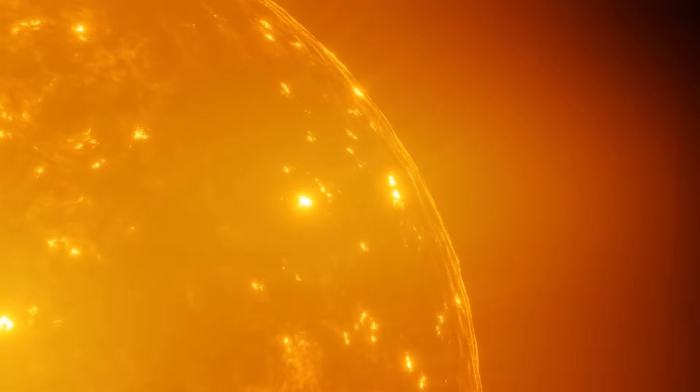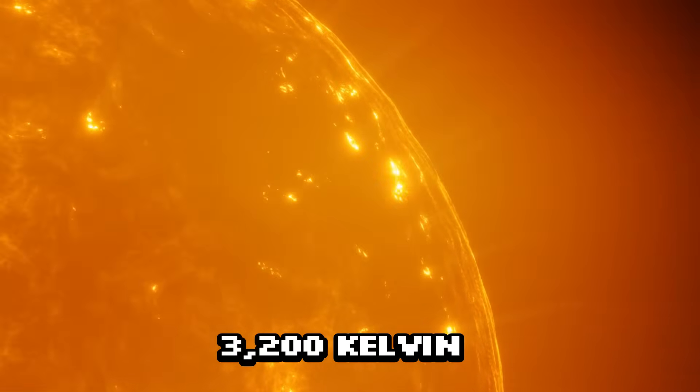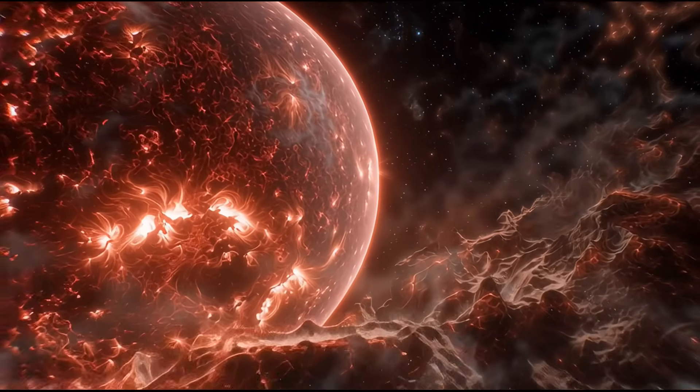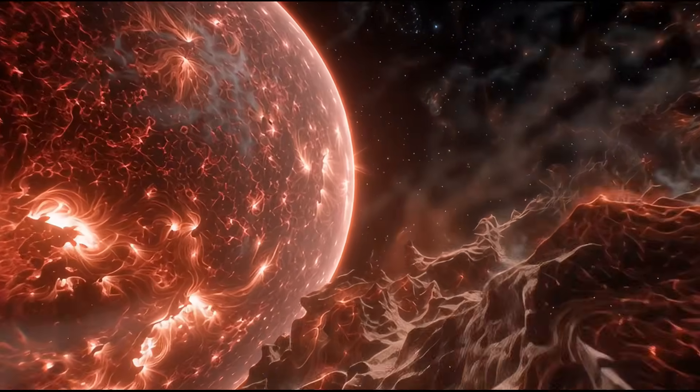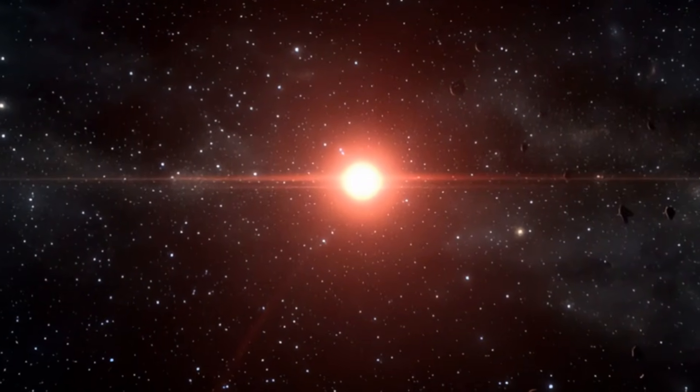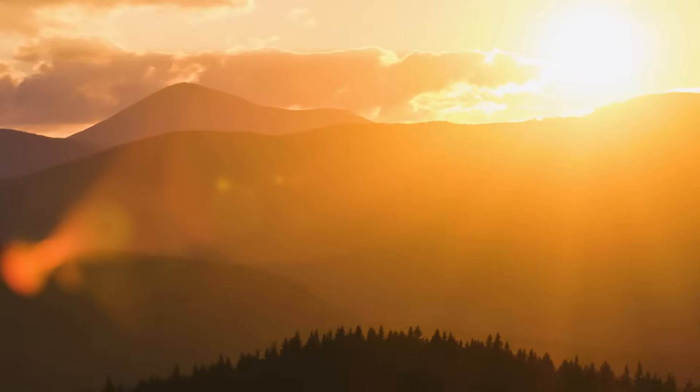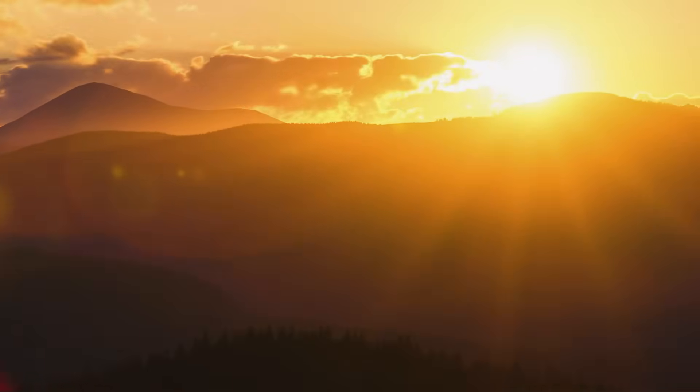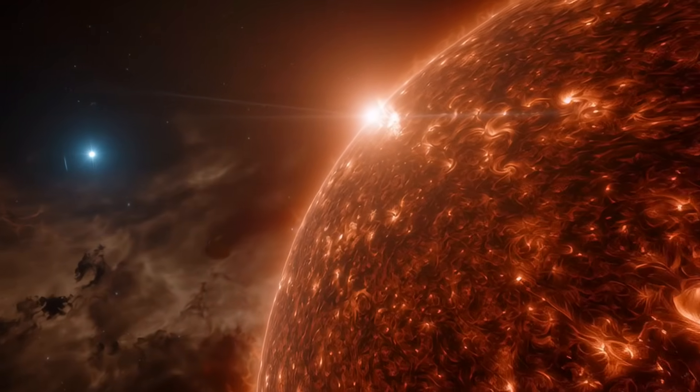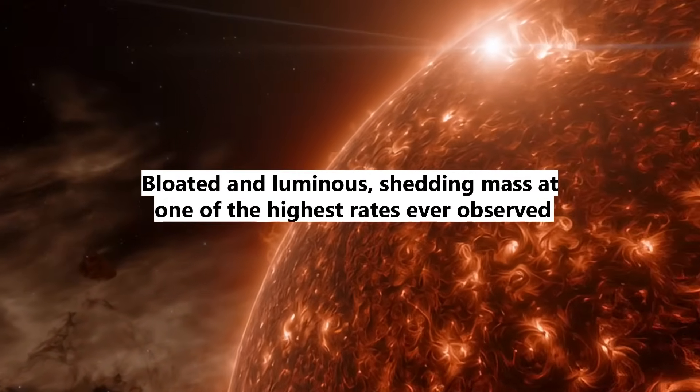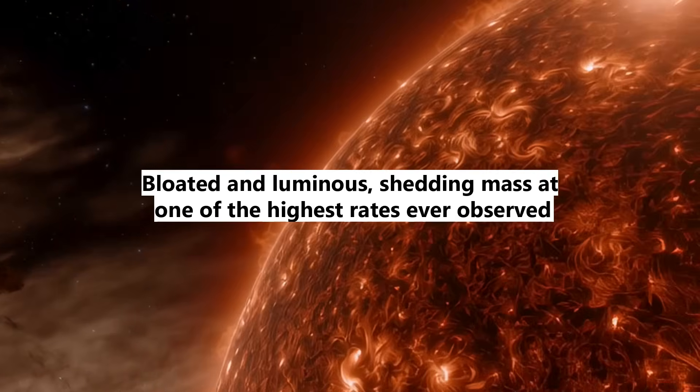Here's where it gets weird. The surface temperature is only about 3,200 Kelvin, which sounds hot until you realize that's actually relatively cool for a star. It glows with this eerie red color because of that lower temperature. But don't let that fool you. It's pumping out 436,000 times more light than our sun. This is a red supergiant approaching the end of its life, bloated and luminous, shedding mass at one of the highest rates ever observed.